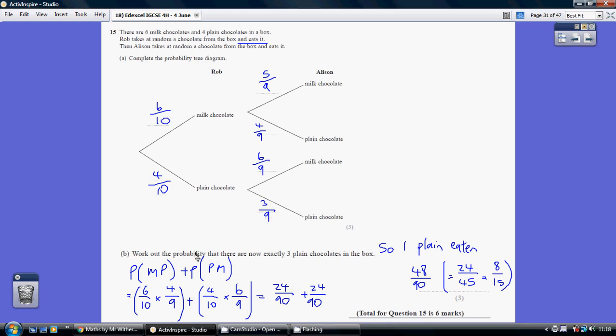Now, part B, work out the probability that there are now exactly 3 plain chocolates in the box. 3 plain chocolates. So there are 4 plain chocolates to start with.